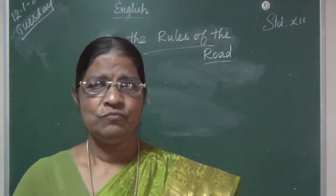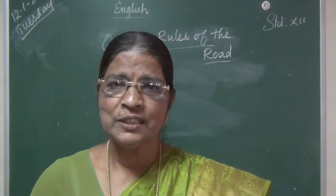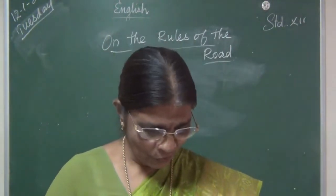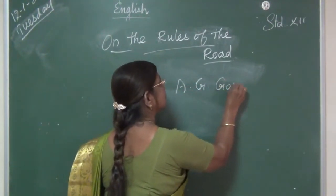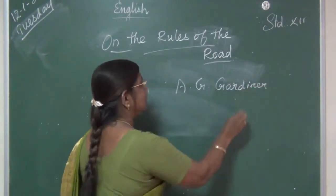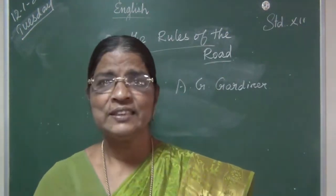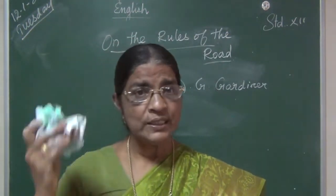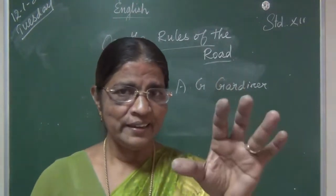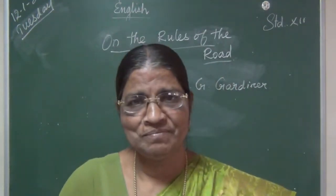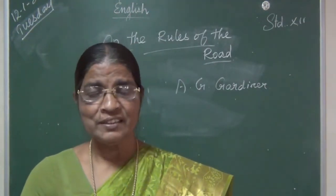Today, the next lesson is the last unit prose: 'On the Rules of the Road.' By seeing the title, A.G. Gordon — he is a British writer, a very efficient writer. Through his writing he brings out a very important and useful idea, especially for the student community. We are living in independent India. We are saying we live in an independent country.